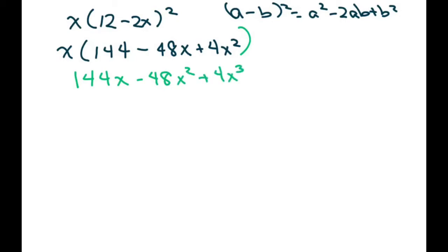Now, what we want to do is take the derivative of our volume with respect to x, and that's going to equal 144 minus 96x plus 12x squared. And we set this to 0.